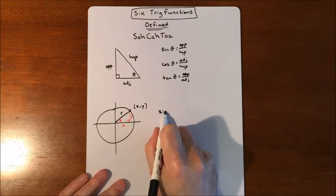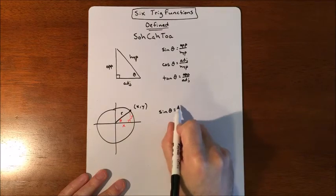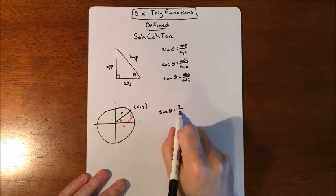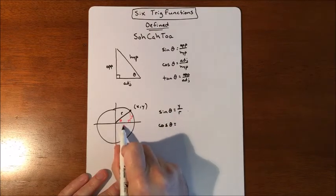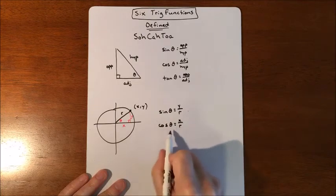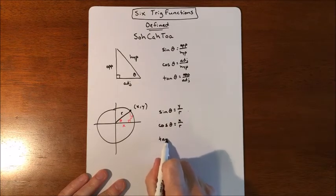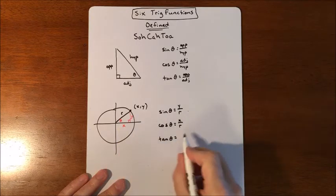So sine of our angle is going to be opposite over hypotenuse, so y over r. Cosine of our angle is going to be adjacent over hypotenuse, x over r. And then tangent is going to be opposite over adjacent, y over x.